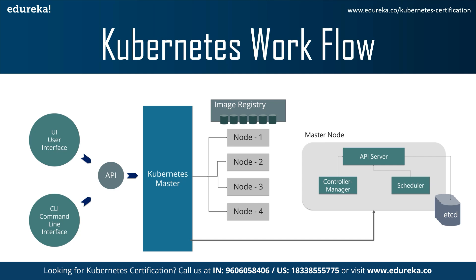As you can see in this diagram, the master node has various components like API server, controller manager, scheduler and etcd. The API server is the entry point for the REST commands used to control the cluster. The controller manager is a daemon that regulates the Kubernetes cluster and manages different non-terminating control loops. The scheduler schedules tasks to slave nodes and stores the resource usage information for each slave node. And etcd is a simple distributed consistent key-value store, mainly used for shared configuration and service discovery.